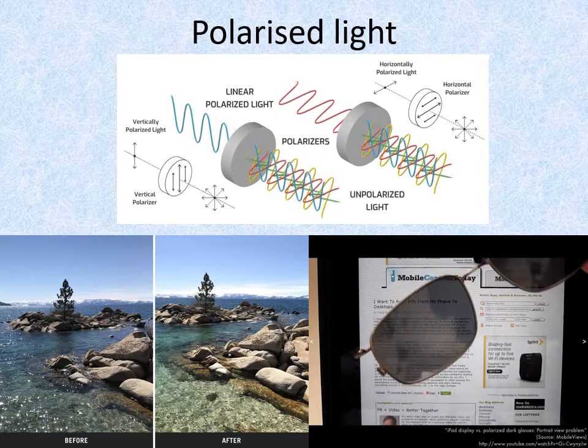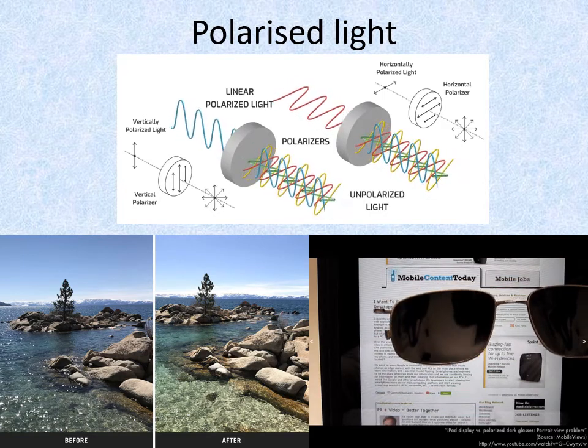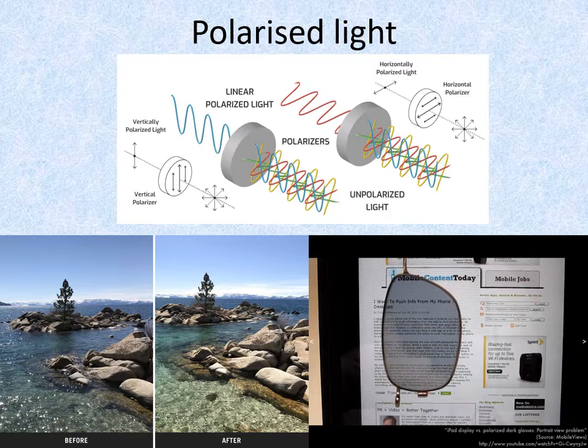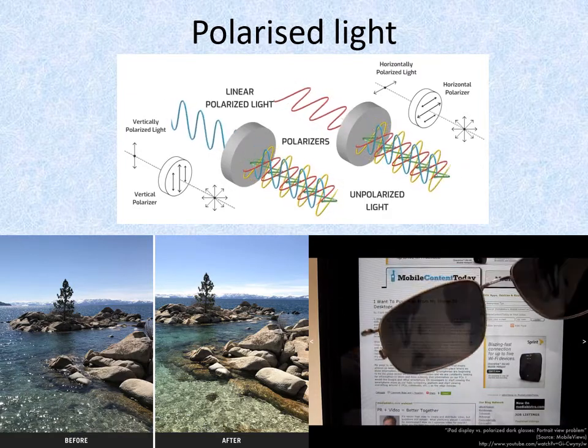Although not shown here, the plane of polarisation of light can be rotated by passing it through a solution of an optically active chemical compound such as a sugar. Some compounds rotate clockwise and some rotate anti-clockwise.